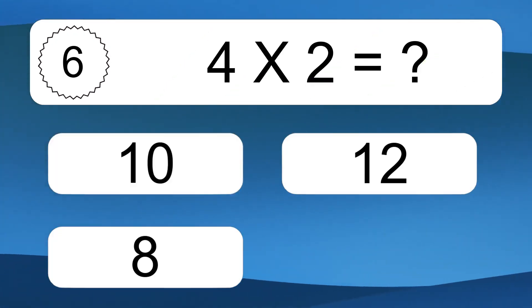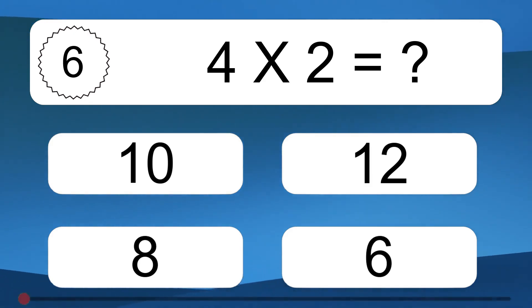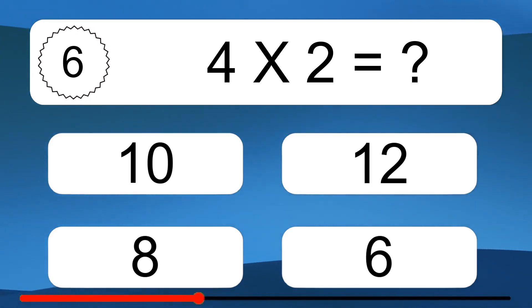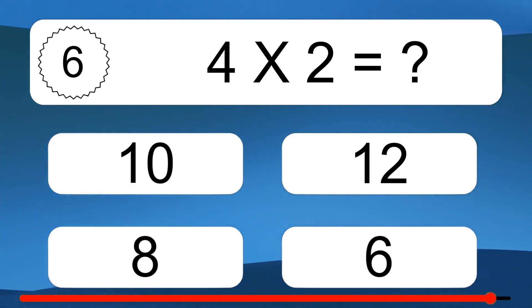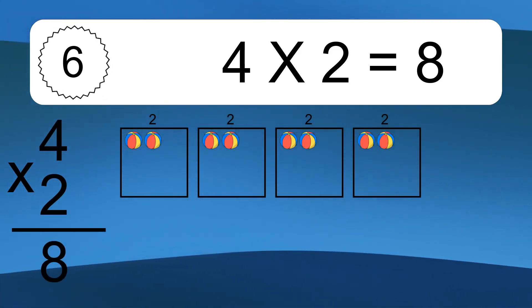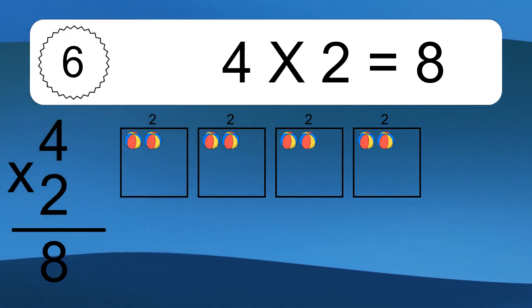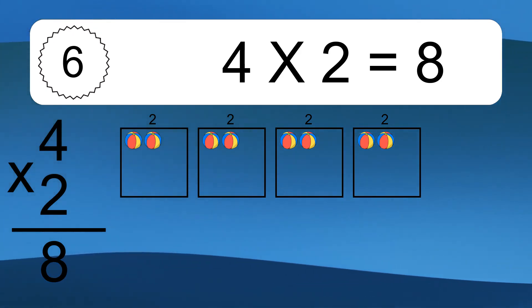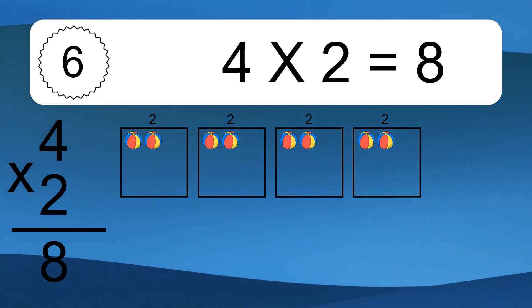4 times 2 equals what? 4 times 2 equals 8. We have 4 boxes, and each box has 2 colorful balls inside. If you count all the balls in all the boxes together, you will have 4 times 2 balls. This equals 8 balls.